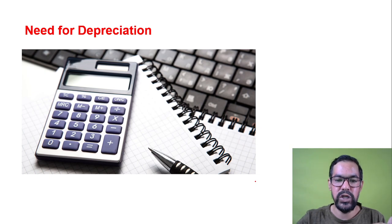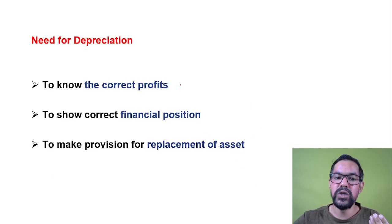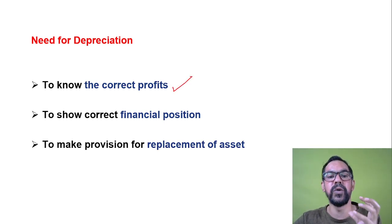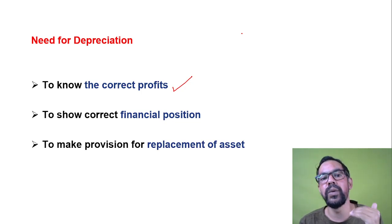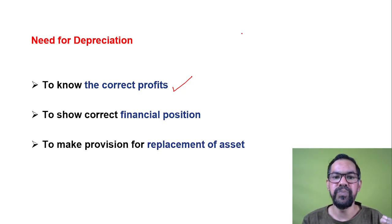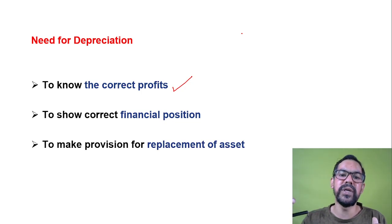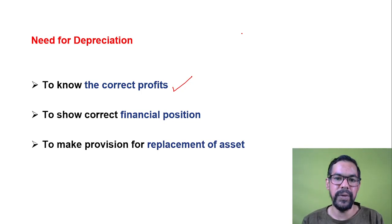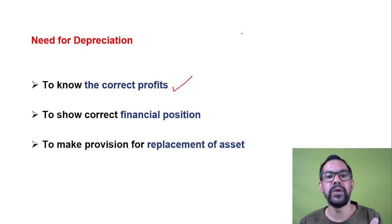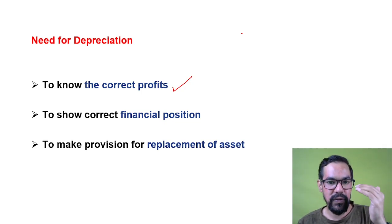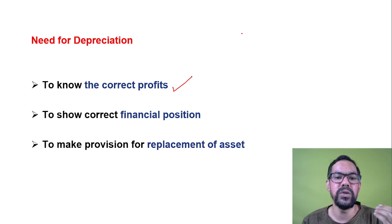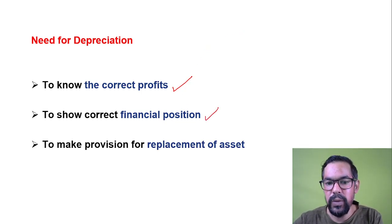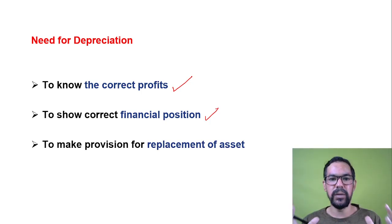With depreciation, you know the correct profit. For example, you buy a car for touring or travel purposes worth 15 lakh rupees. After one year the car value is 13 lakh, meaning it depreciated by 2 lakh during the financial year. If the overall revenue generated by that asset was 3 lakh, the actual profit is only 1 lakh, because the monetary value of that asset also decreased.